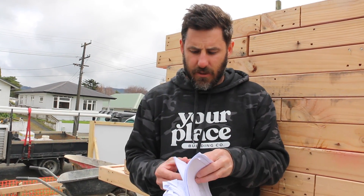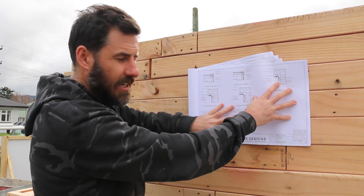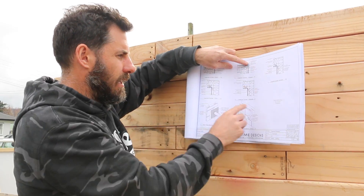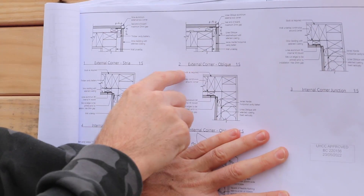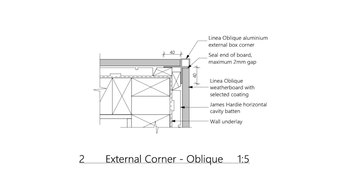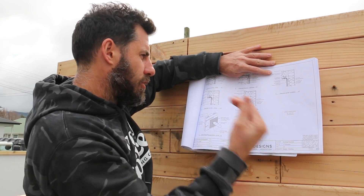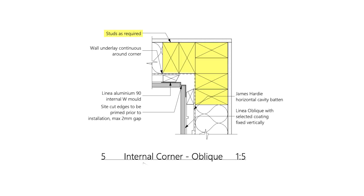There is a section in the plans called details — a lot of these are standard details. We've got an external corner and an internal corner. It's showing us the layer of events: each item has an arrow so you can see that the wall underlay, the cavity baton, your cladding and your framing are all labelled. It also has measurements and shows you the order of events. We put our framing on, then underlay, then batons. Look at that and ask yourself: in what order would I put that on?